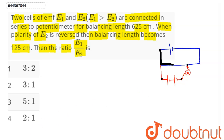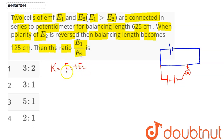The potential gradient in this case is the potential difference, which is e1 plus e2, divided by the balancing length l1.